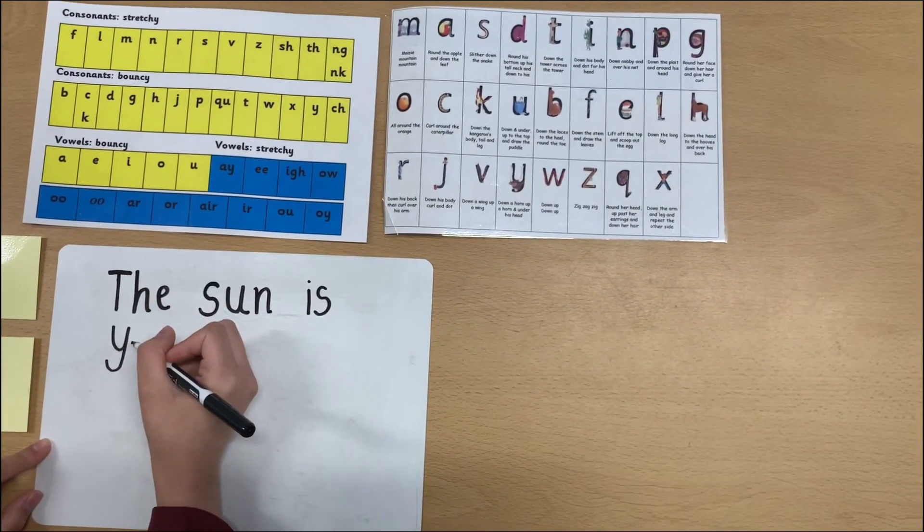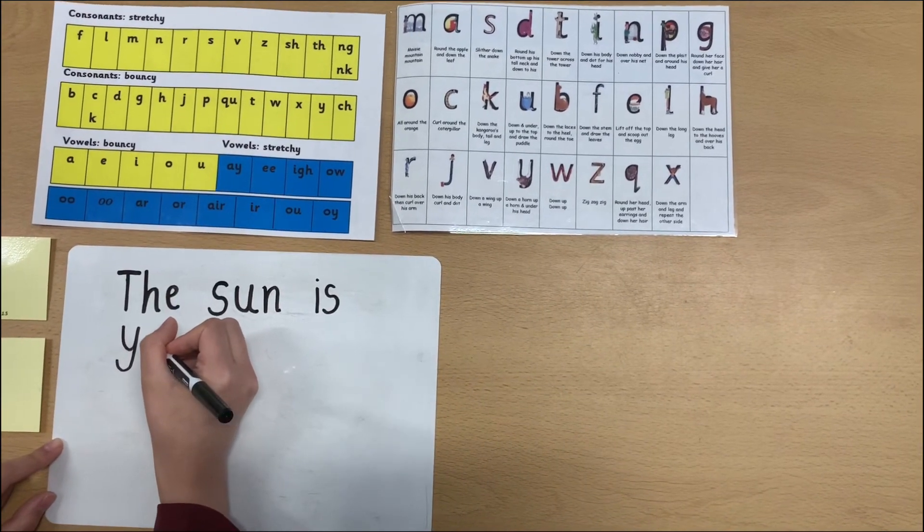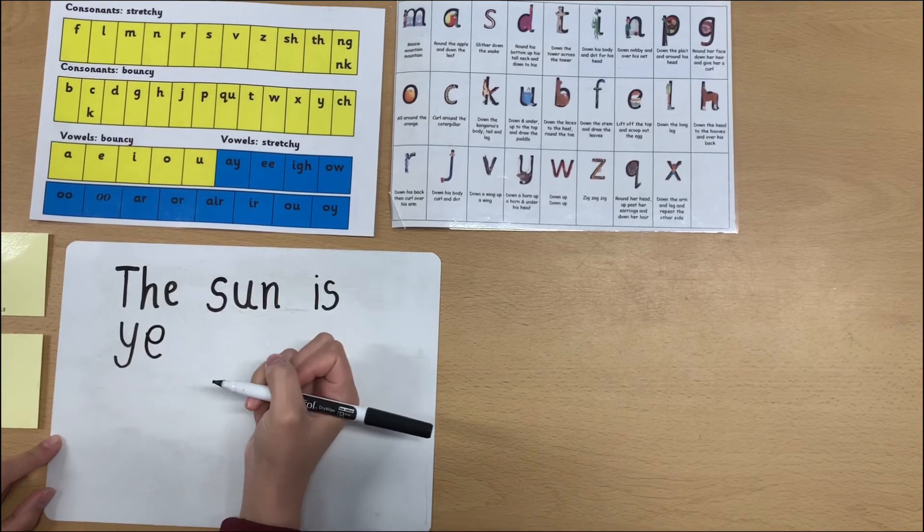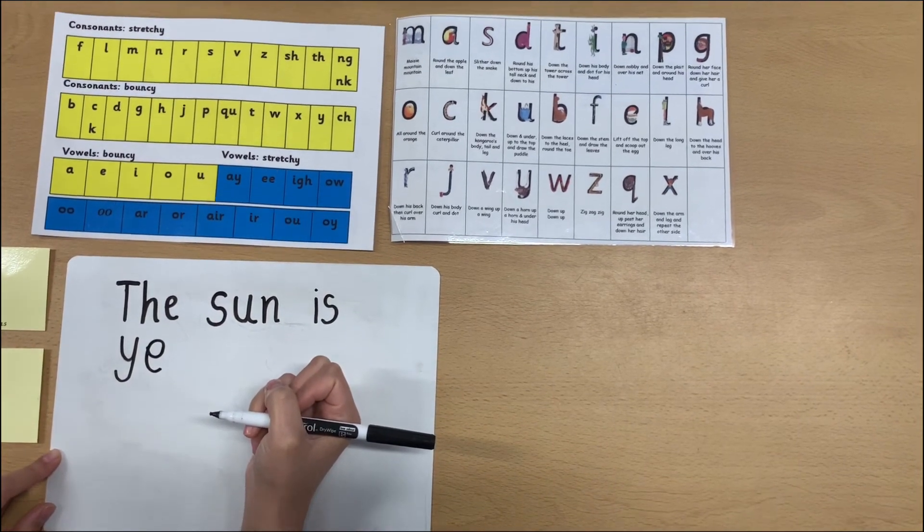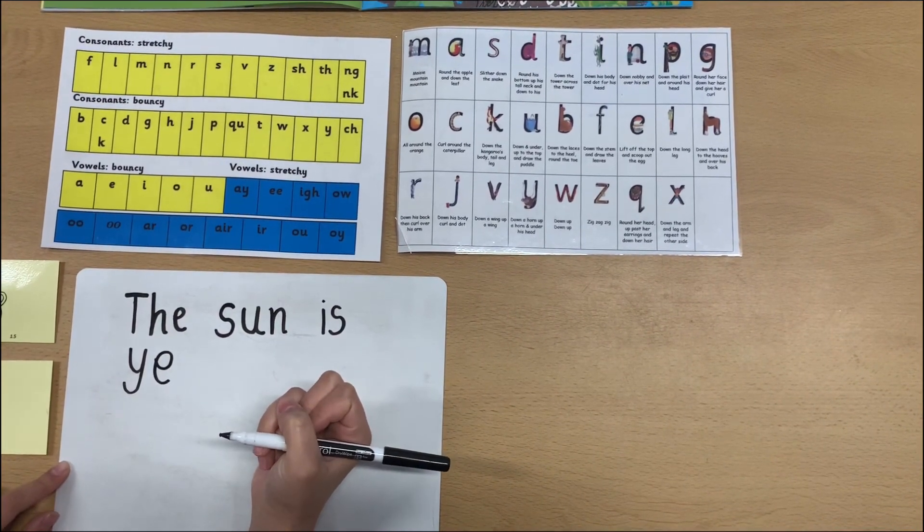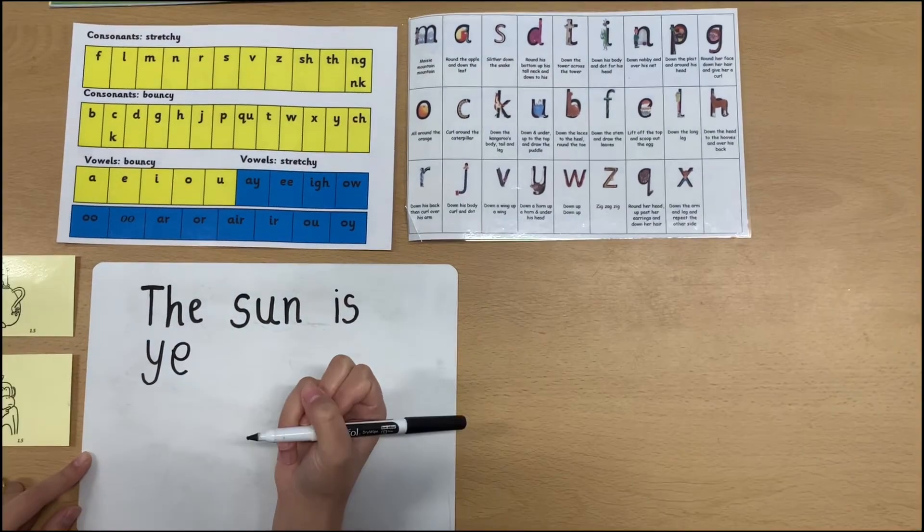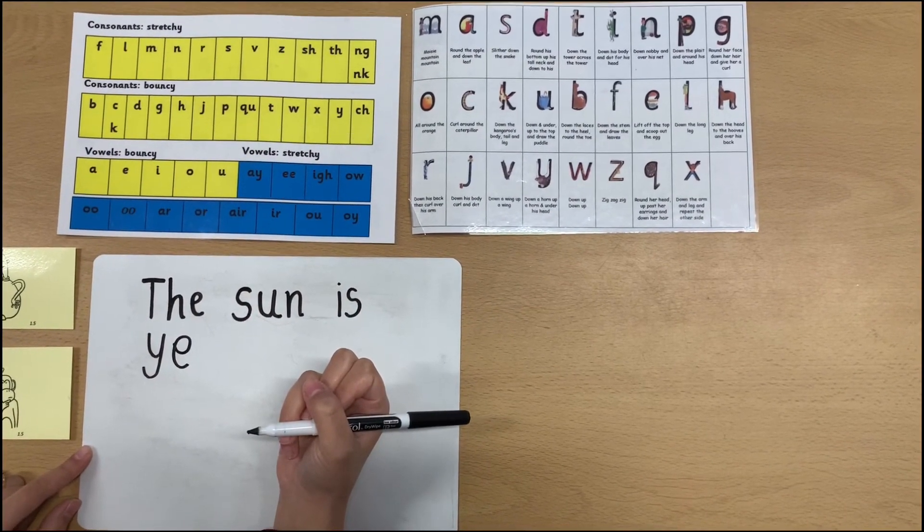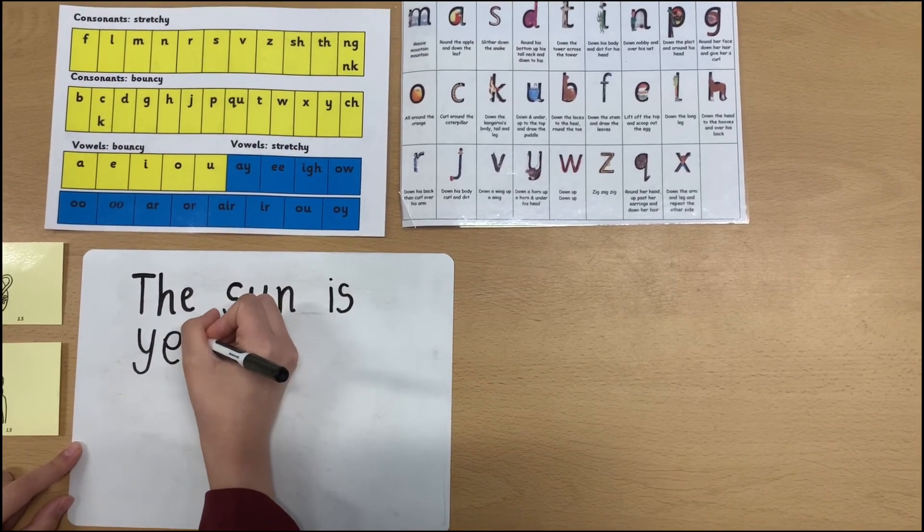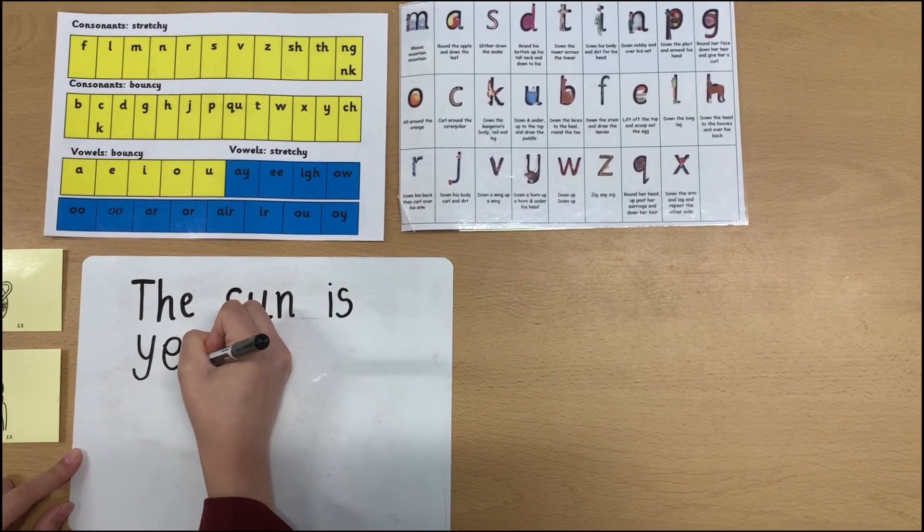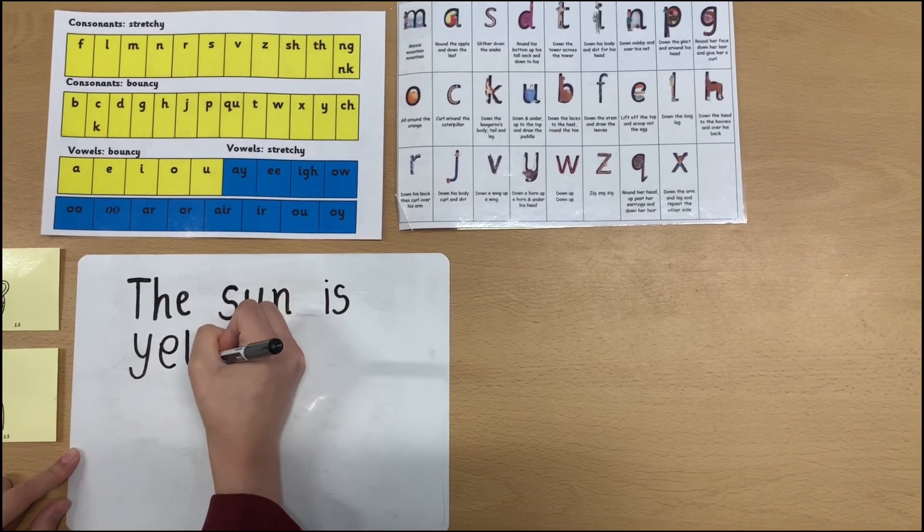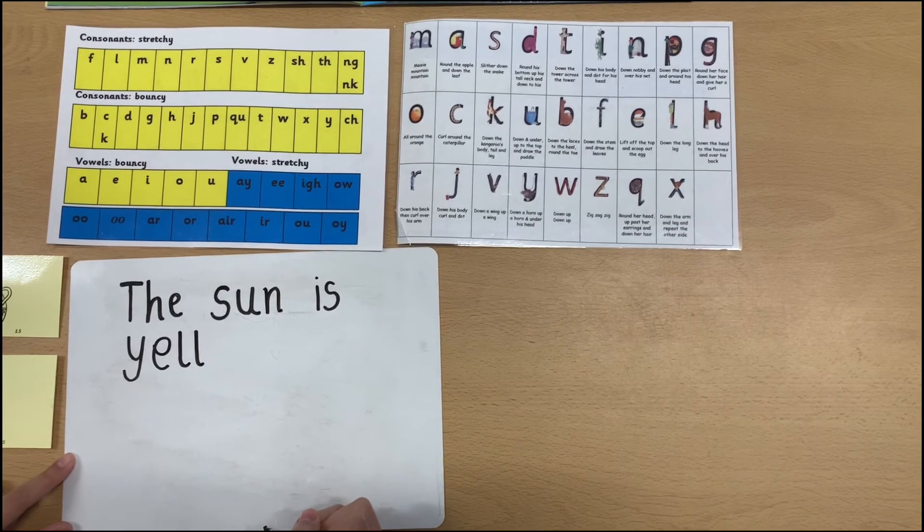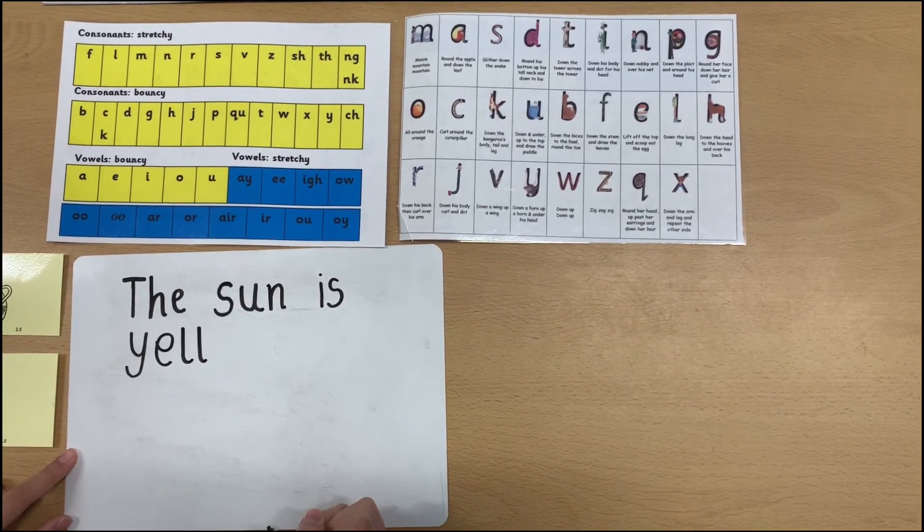Y, e, l, l, u, our u sound. This word yellow has two l's, so I'm going to write down the long leg, down the long leg, y-e-l-l-o.